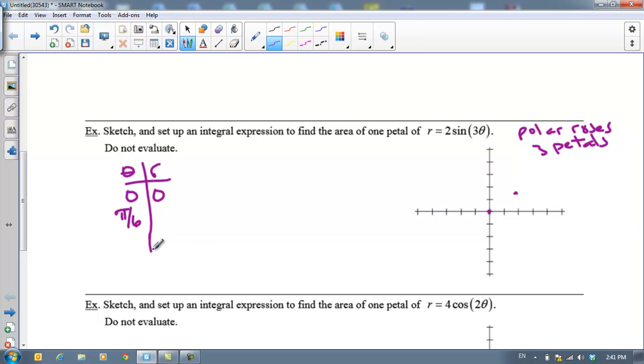And then if I plug in π/3, π/3 times 3 is π, and the sine of π is 0. And so I'm back to here. So this graph gets sketched like this. Here's the first petal.